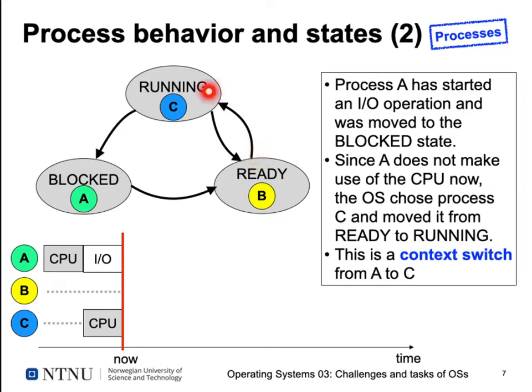We are continuing to execute instructions, but these instructions now belong to process C rather than process A — the operating system intervened to enable this switchover. Now C is running and B is still ready. Why C and not B? The operating system has to choose: some decisions can be made using priorities — maybe C had higher priority — or by random choice, or by ordering processes by the sequence they entered the ready state.